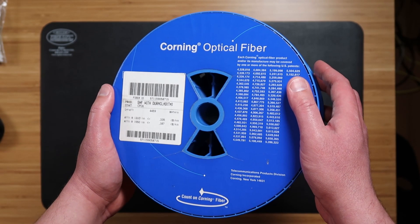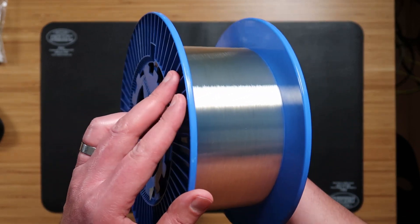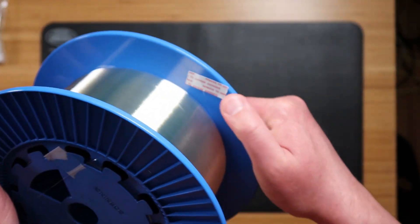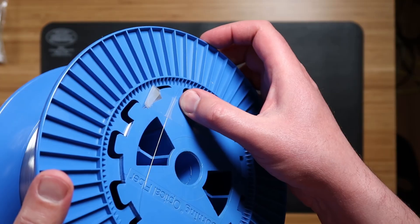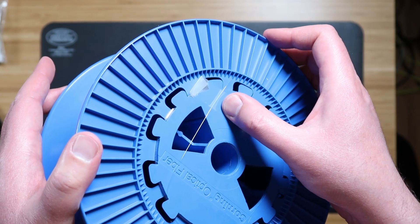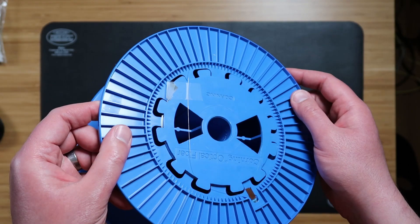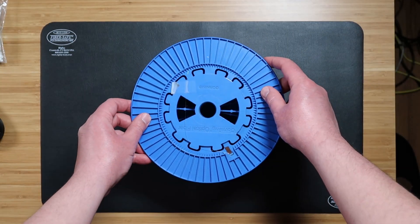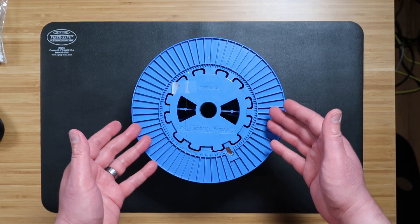When you receive a fiber spool like this, typically you're going to have a fiber taped on the inside of the spool and a fiber taped on the outside of one of the spool sides. Be very careful handling the spool side with the external fiber strand exposed. Typically, it's best to place the side with the exposed fiber on the top when you're working with it.